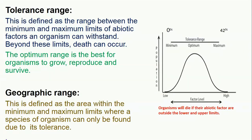Lastly, we look at geographic range. This is defined as the area within the minimum and maximum limits where a species of organism can only be found due to its tolerance. We have different kinds of habitats — the tropical region, where the weather is always hot, and the temperate region, where the weather is always cold. Some organisms can survive in the temperate region and some in the tropical region because they are within their minimum and maximum limits. Taking an organism from a tropical region and placing it in a temperate region may cause the organism to die because it is not within the area of its minimum and maximum limits.